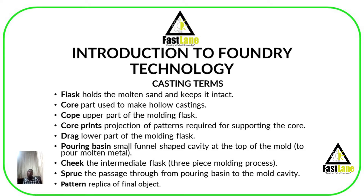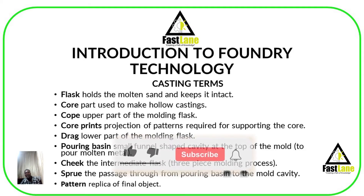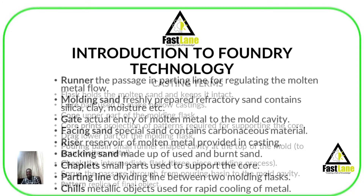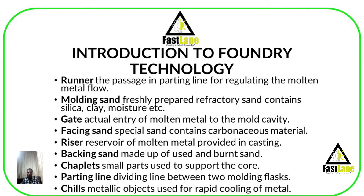Then we have a pattern. We can't talk about Foundry without looking at the pattern. A pattern is simply a replica of the final product — a model of the final product. We are going to see the different types of patterns, different materials from which we can make patterns like wood or metal, how we look at the allowances and dimensions, and the advantages of different materials for making patterns. We have things like runners — a runner is just a passage in the parting line for regulating the molten metal flow.